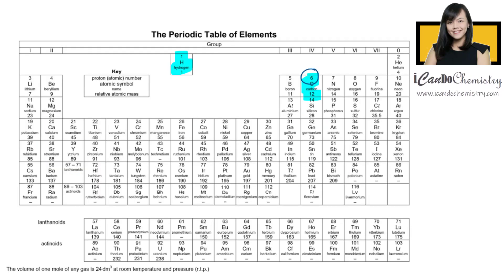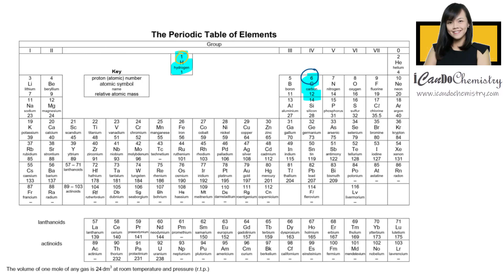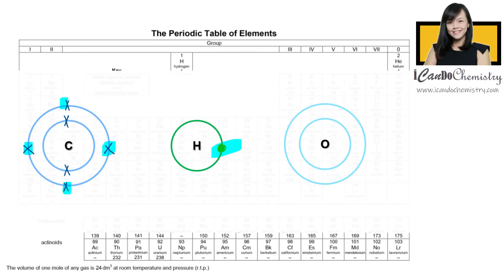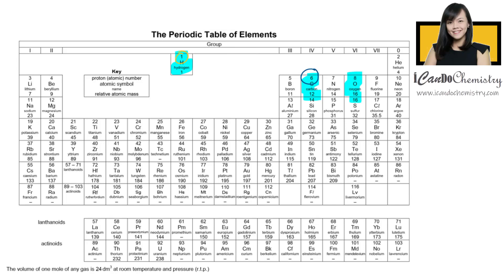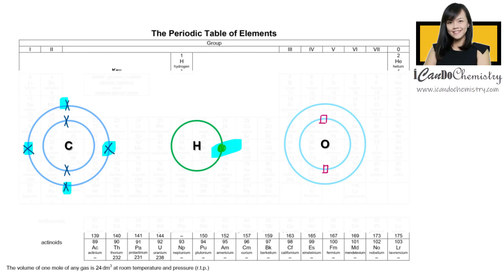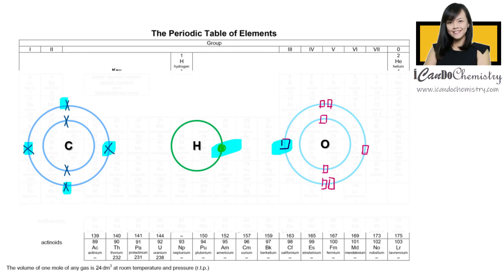This is hydrogen in the periodic table. It has only one electron in its first shell and it needs one more electron to achieve stable noble gas duplet electronic configuration. This is oxygen in the periodic table. It has eight electrons and it will share two of its outermost electrons with other non-metal atoms to achieve stable noble gas octet electronic configuration.